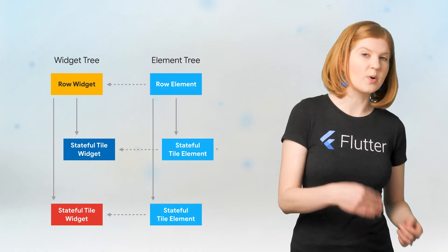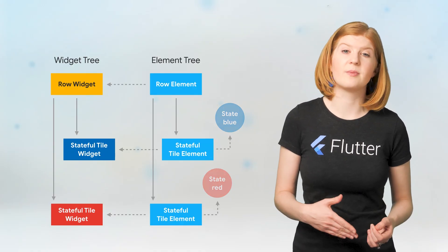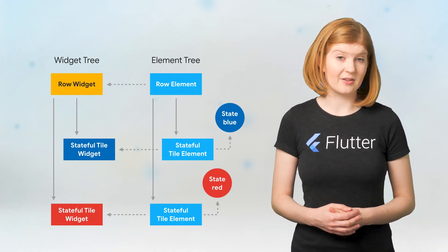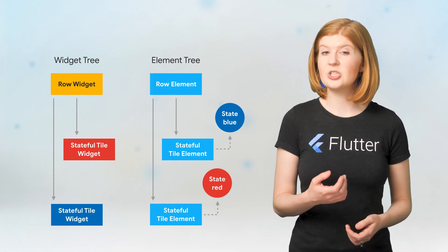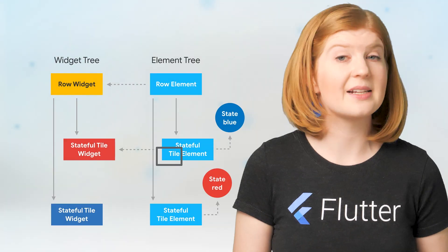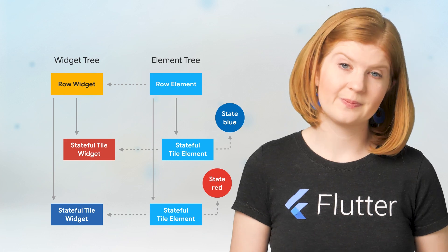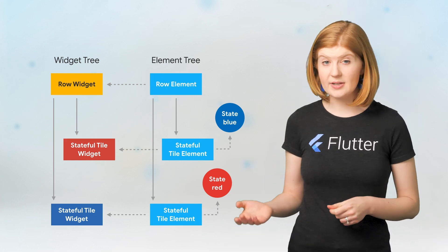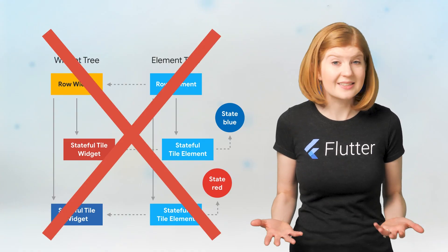Now let's run through the same scenario with stateful tile widgets. You can see the same widgets and elements as before, but now there are a pair of state objects with them, and the color information is being stored there, not in the widgets themselves. When I swap the order of the two widgets, Flutter walks the element tree, checks the type of the row widget, and updates the reference. The tile element checks that the corresponding widget is the same type — a tile widget — and it is. Flutter uses the element tree and its corresponding state to determine what to actually display, so from our perspective, it looks like your widgets didn't properly swap.